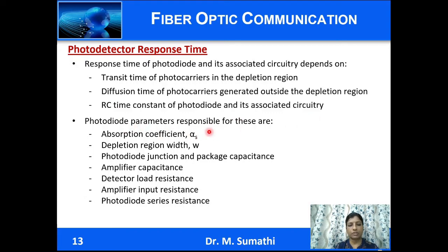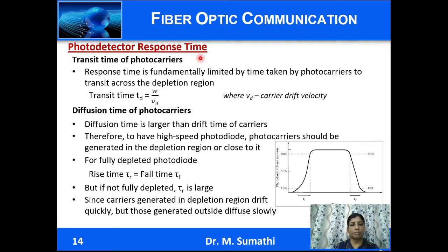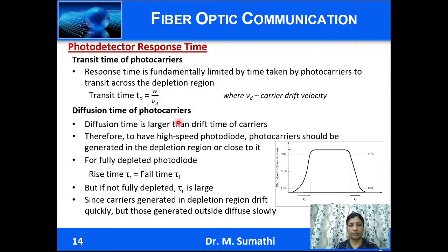The parameters of the photodiode responsible for response time include absorption coefficient, depletion region width, photodiode junction and package capacitance, amplifier capacitance, detector load resistance, amplifier input resistance, and photodiode series resistance. The transit time is fundamentally limited by the time taken by photocarriers to cross the depletion region, given by the ratio of width to carrier drift velocity. The larger the depletion region width, the longer it takes for carriers to travel.